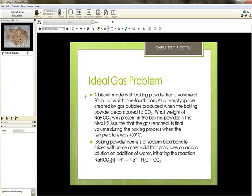The ideal gas equation is really the only one you need to know for chemistry, so let's take a look at a problem for it. A biscuit made with baking powder has a volume of 20 mL, of which one-fourth consists of empty space created by gas bubbles produced when the baking powder decomposed to carbon dioxide. What weight of sodium bicarbonate was present in the baking powder in the biscuit? Assume that the gas reached its final volume during the baking process.